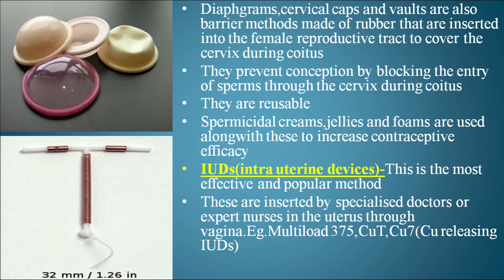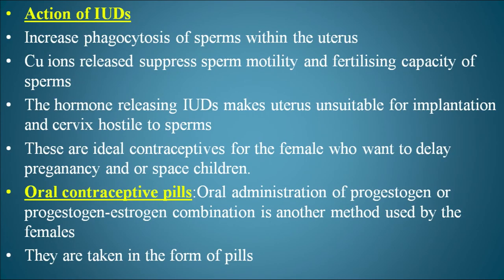The most popular method of contraception is the IUD — intrauterine device — inserted by specialized doctors or nurses in the uterus through the vagina. Examples include Multiload-375, Copper T, Copper 7, and Progestasert. IUDs increase phagocytosis of sperm within the uterus, copper ions suppress sperm motility and fertilizing capacity, and hormone-releasing IUDs make the uterus unsuitable for implantation and the cervix hostile to sperm.